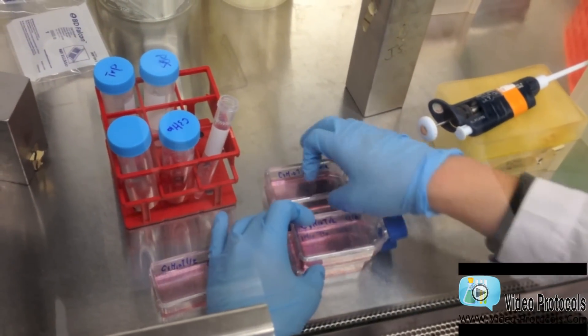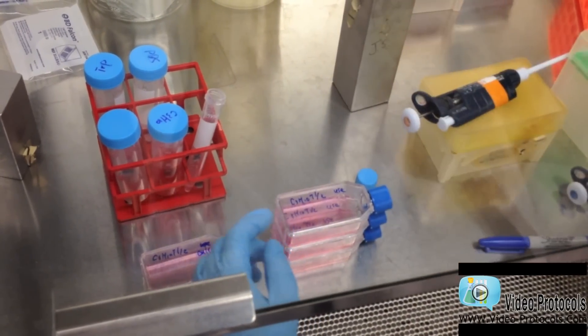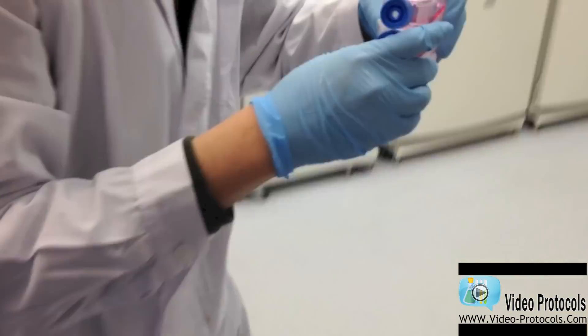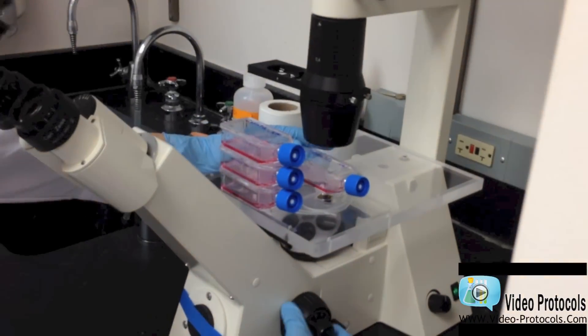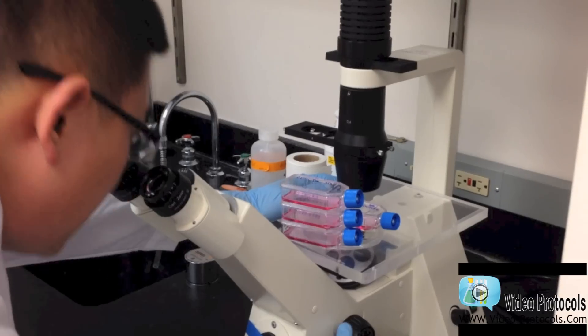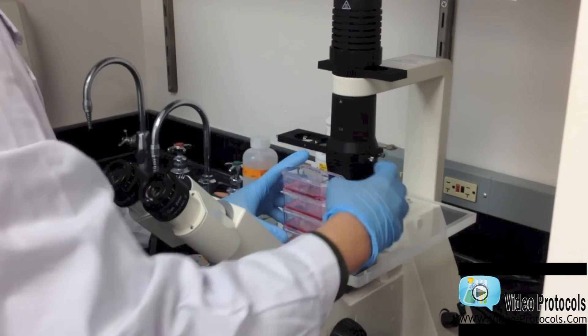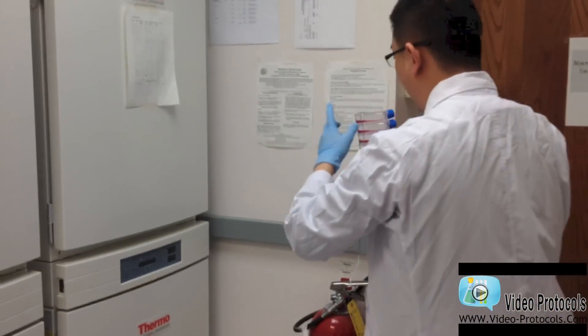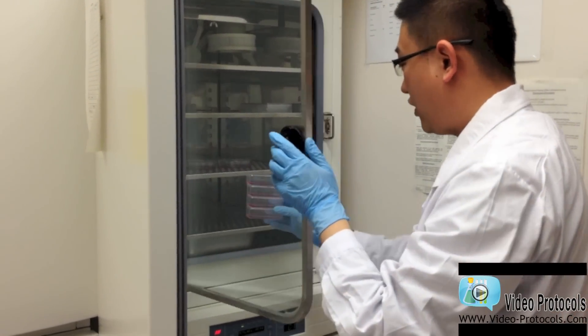After this step is done, the leftover cell suspension should be aspirated. And I will take a look at those flasks under the microscope to see if I get the right cell density. Now that I make sure all the flasks got the right cell density I want, I then put them back in the incubator.